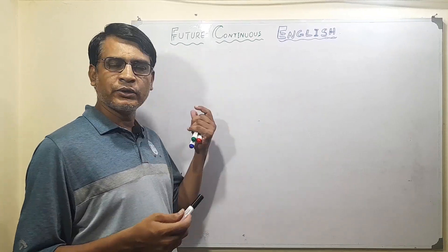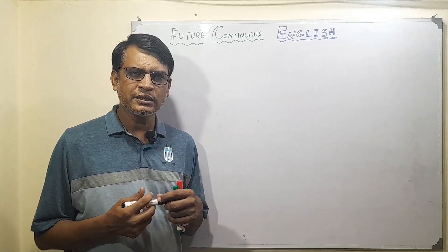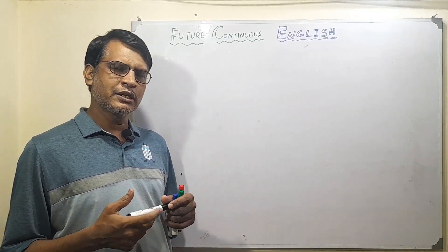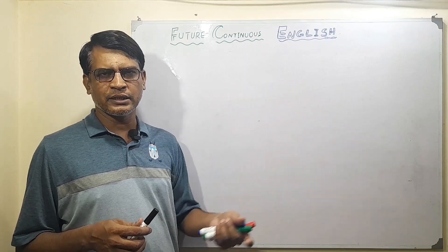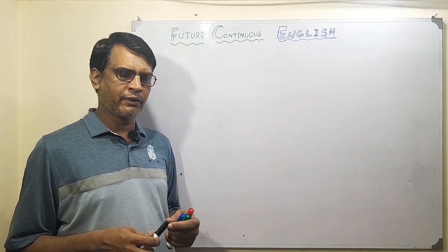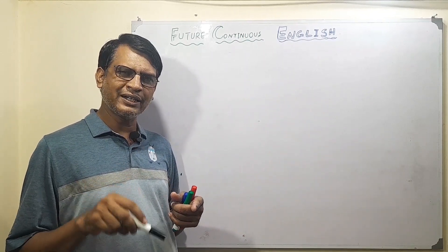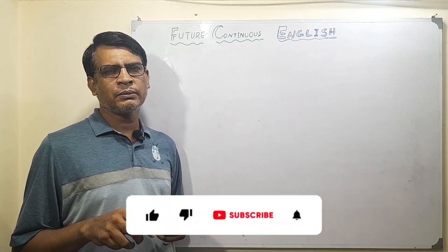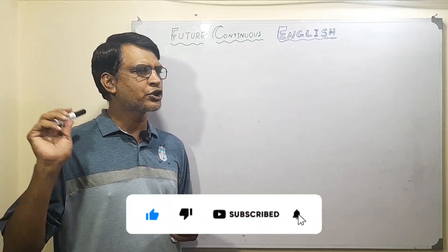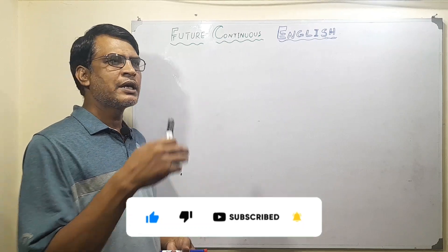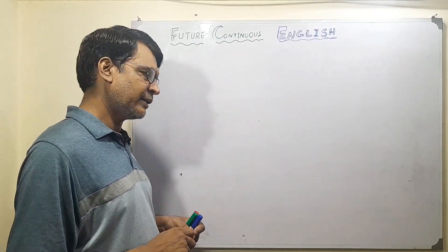Our today's lesson is all about future continuous. Future continuous, as the name suggests, is about something that will be happening in the future at a certain time — like present continuous talks about now, past continuous talks about something that was in motion in the past, and future continuous is something that will be happening at a particular or specific time.